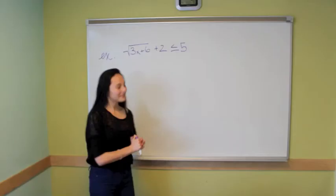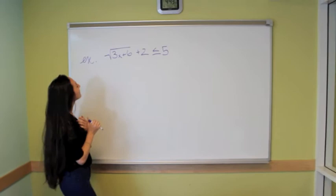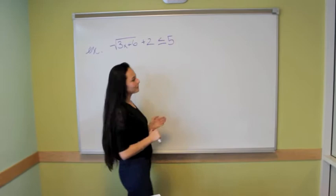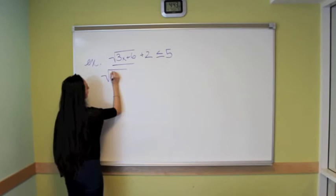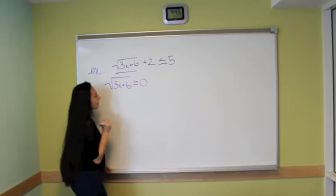So let's do an example. This is our example. The square root of 3x plus 6 plus 2 is less than or equal to 5. So for our first inequality, we will solve it like this. So we'll set this, our radicand right here, greater than or equal to 0. So we do this square root of 3x plus 6 greater than or equal to 0.